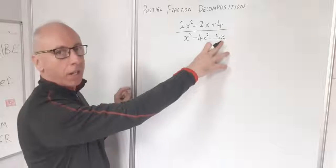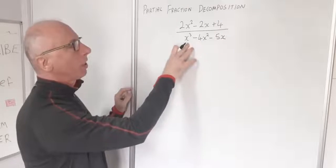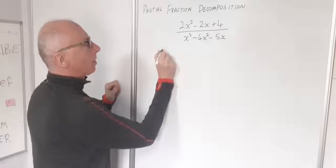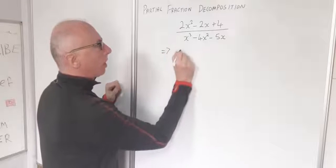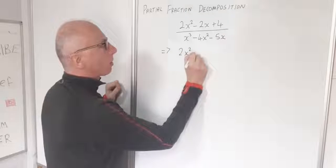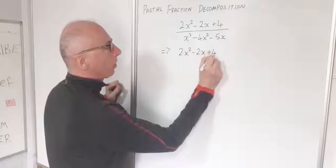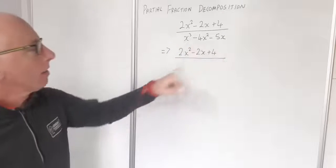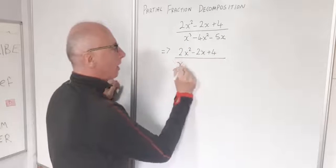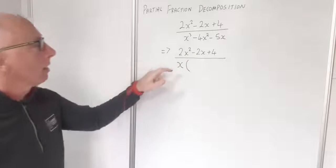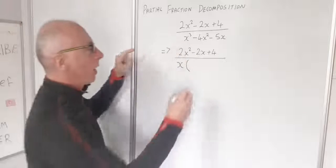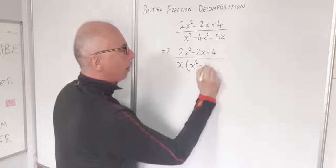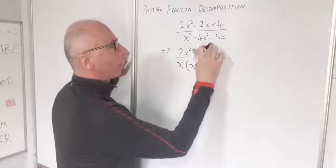I've got a cubic but I can see every term in the denominator has an x in it, so I can divide through the denominator by x. So I'll leave the numerator 2x squared minus 2x plus 4 as it is, and factor out x from the denominator, leaving x times the bracket x squared minus 4x minus 5.